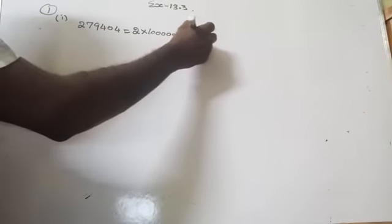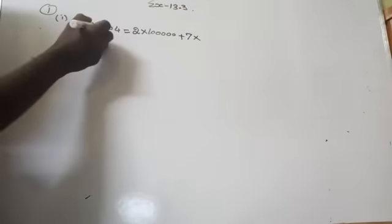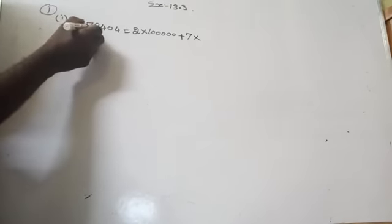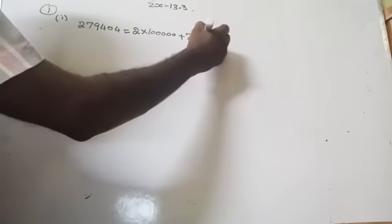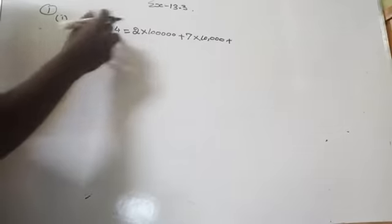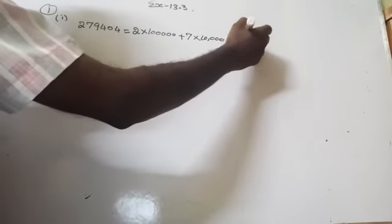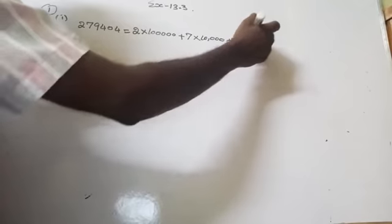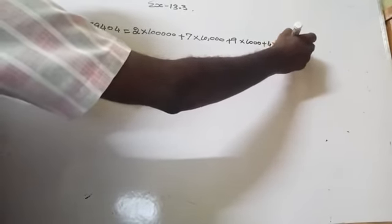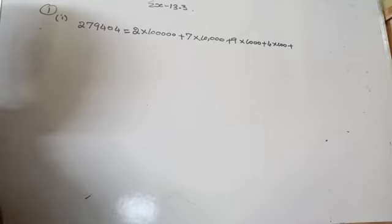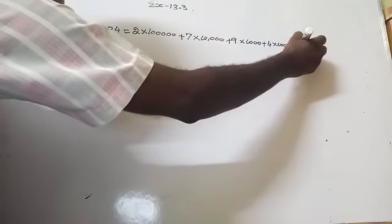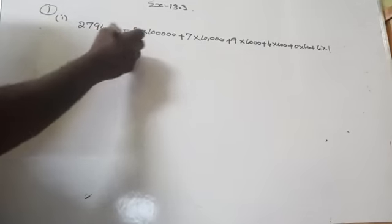So 2 represents two lakh. Plus 7 into 10,000 — because it is the placeholder of 10,000, that is 70,000. Plus 9 into 1000, plus 4 into 100, plus 0 into 10, plus 4 into 1. Are you getting it?